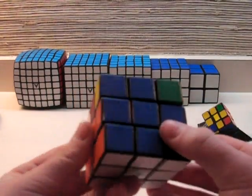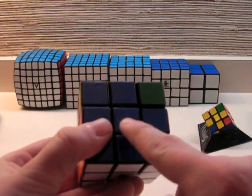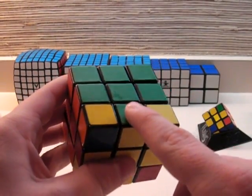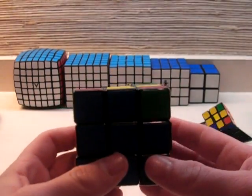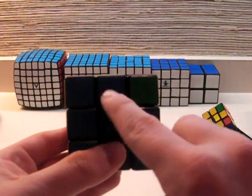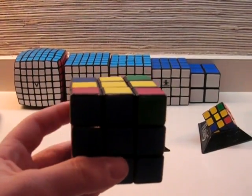So now, as you can see, it matches on the front here, like you would normally want it to, and on the back, but these two don't match on the right and left sides. So what you want to do is hold one of them solved in front of you and perform the algorithm.